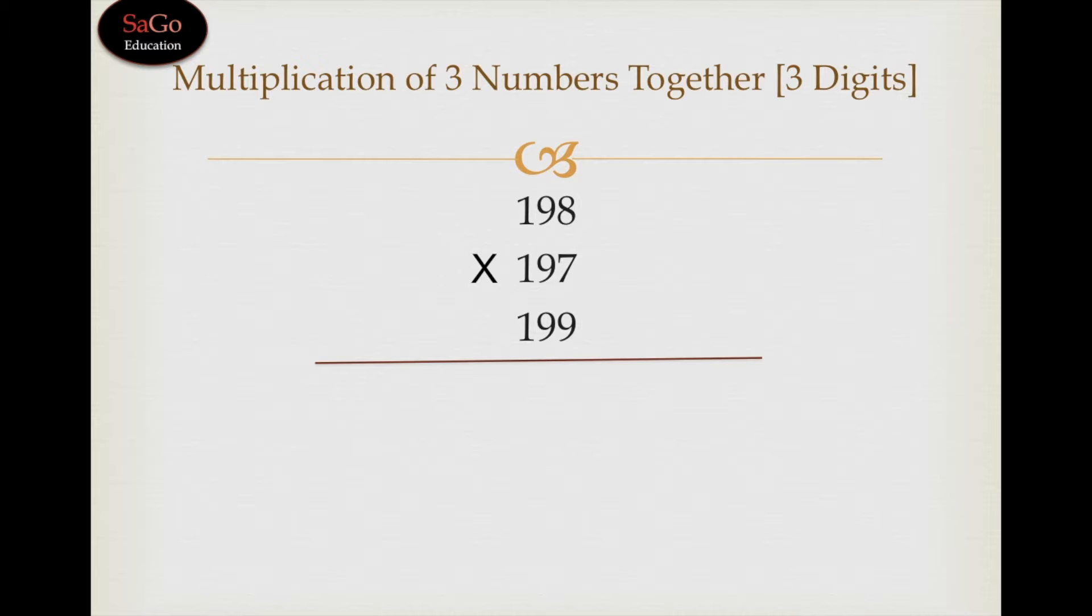Let's take one more sum: 198 multiply by 197 multiply by 199. Here all the numbers are 3-digit and are being multiplied with each other. All are below base. 198 is 2 less than its base 200, 197 is 3 less than its base 200, and 199 is 1 less than its base 200. First, we will take the product of these three digits: minus 2 times minus 3 times minus 1 will give us minus 6.